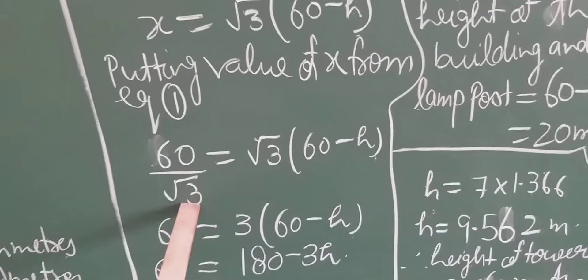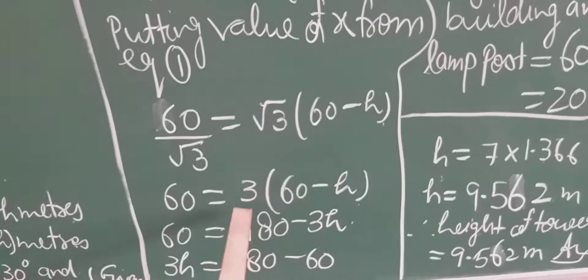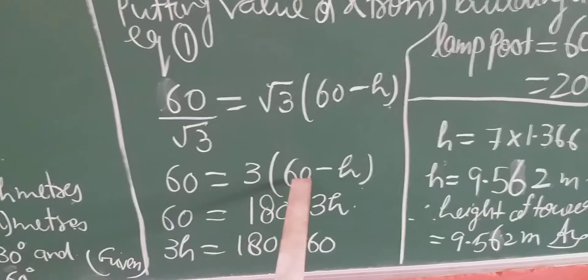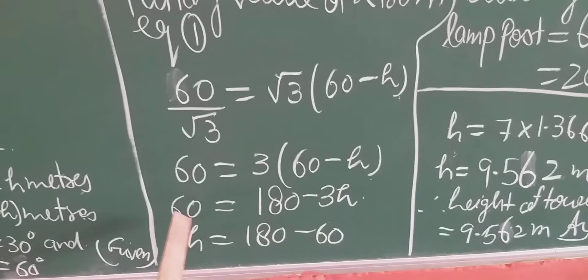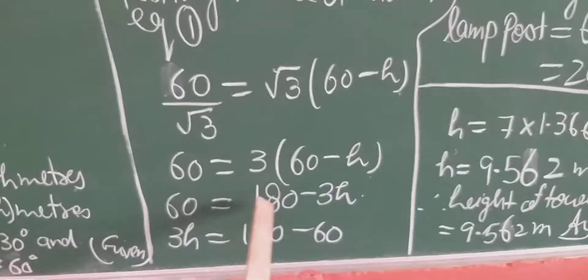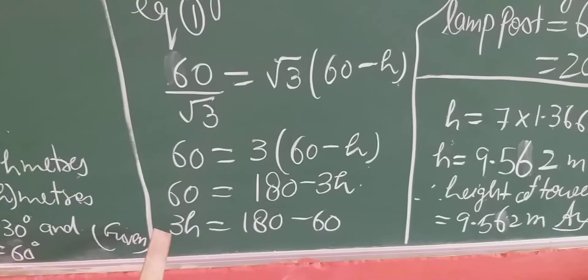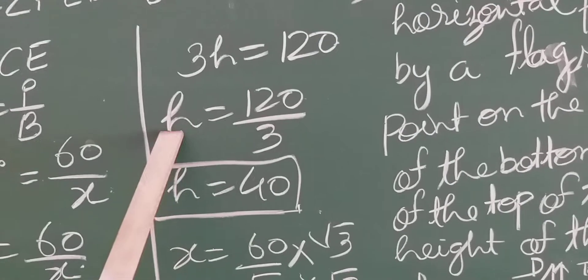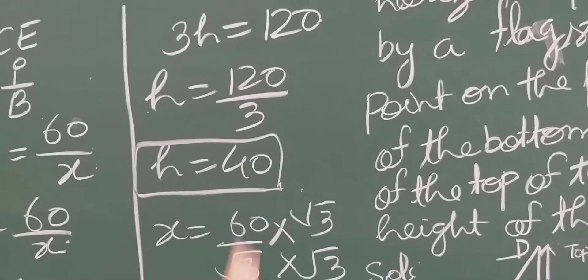Putting the value of x from equation number 1 — x equals 60 upon root 3 — so 60 upon root 3 equals root 3 times (60 minus h). By cross multiplication: 60 equals 3 times (60 minus h). Opening the bracket: 60 equals 180 minus 3h. So 3h equals 180 minus 60, giving 3h equals 120, therefore h equals 120 upon 3, h equals 40. The height of the lamppost is 40 meter.